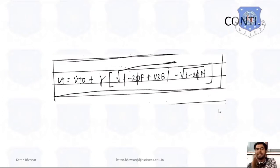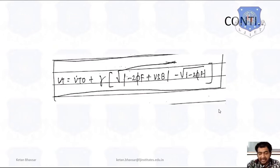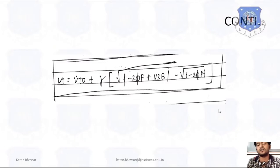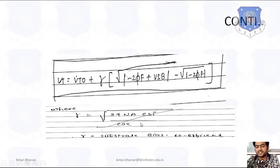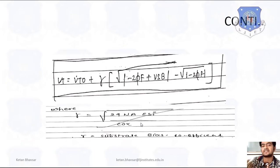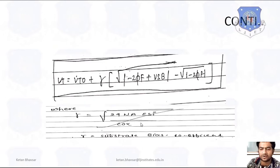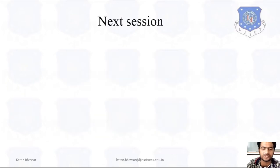This equation takes care of threshold voltage in both situations — Vsb not equal to zero and Vsb equal to zero — because ideally we must satisfy these two conditions before working on other scenarios. The coefficient gamma equals √(2·q·NA·εSi)/Cox and is called the substrate bias coefficient. In exams this is asked in multiple ways: prove the gamma coefficient, prove the substrate bias coefficient, or prove the threshold voltage — in all cases you write down this equation for Vt.